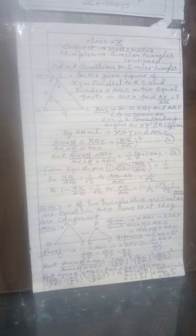So area of triangle BXY upon area of triangle ABC equal to XB upon AB whole square, call it equation 1. But we are given area of triangle BXY upon area of triangle ABC is half.